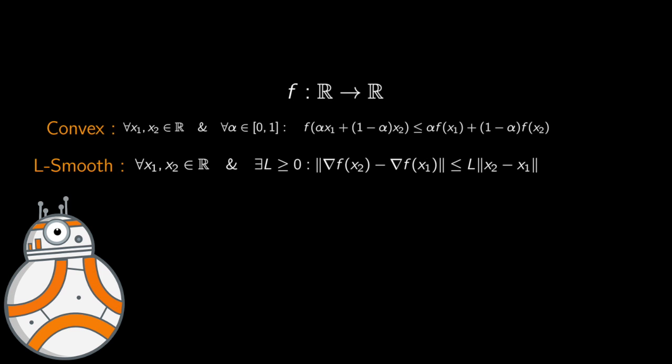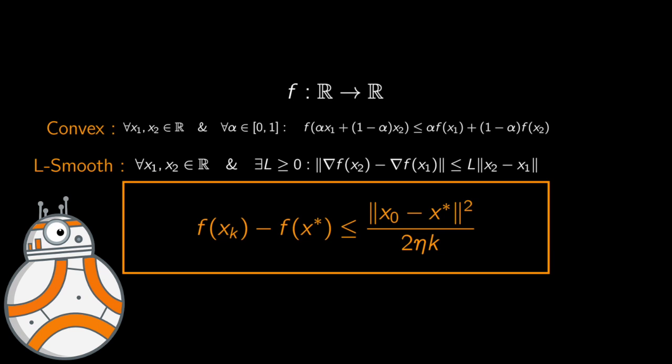Given those two conditions, we've got the following result: at iteration k, the difference between the function evaluated at x_k and the optimal value is upper bounded by ||x_0 - x*||² / (2ηk), where η is the learning rate and k is the iteration number. This clearly tells us that as the number of iterations increases, the difference f(x_k) - f(x*) gets smaller and smaller, and hence we're converging towards the optimal solution on a linear scale. And that's it.